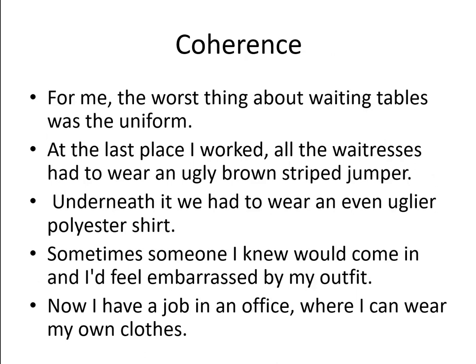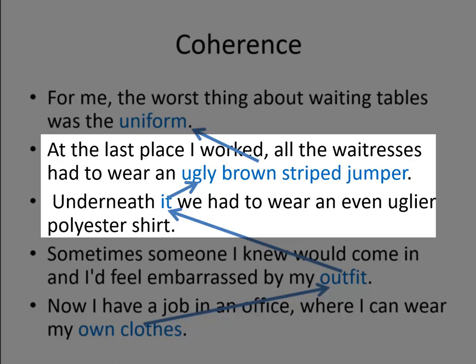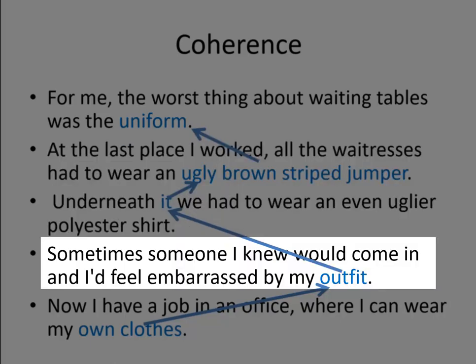Here I've reproduced A with the sentences separated so we can easily analyse them. Can you see the interlocking parts of the chain that runs through this paragraph? Firstly, notice how the uniform is referred to in each of the first four sentences. It's introduced in the first sentence, then more information is given about it in the next two sentences, implying that the person doesn't like the uniform.